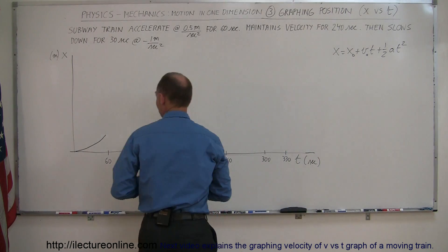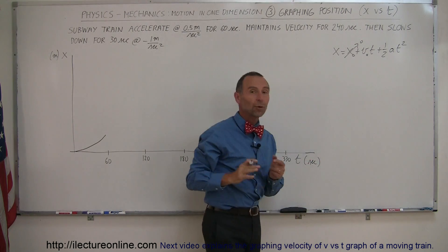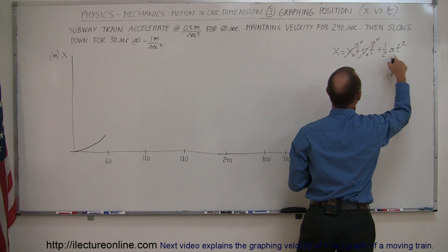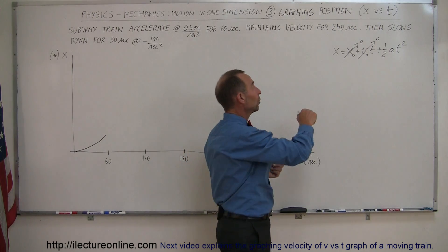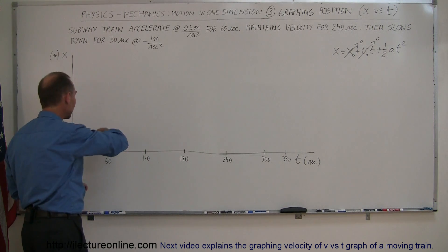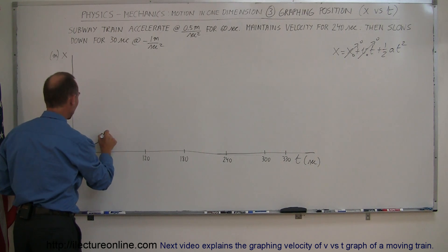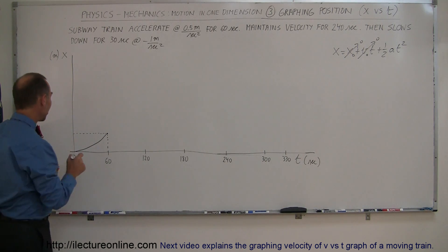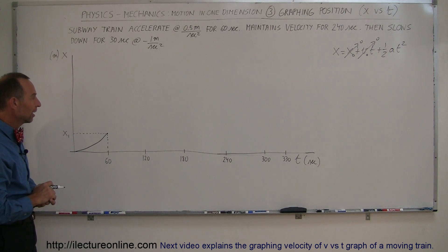In this particular case the train started from the first station, so position is zero, and it started at rest so initial velocity is also zero. That simplifies to x equals one-half acceleration times time squared. As time goes by and it's accelerating, x increases at a quadratic rate — that's why the slope looks like a parabola. At 60 seconds the train will have reached a distance we'll call x1, the first position after it stops accelerating.